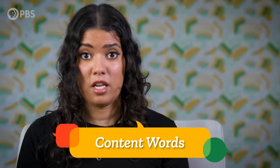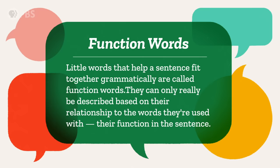Prototype theory works well with content words — words with meanings that we could point to, describe, or draw a picture of. It even works okay with ideas that are abstract, like happiness and democracy. But not every word has a prototype. Take words like 'the,' 'of,' 'is,' 'or,' 'if,' and 'every.' It doesn't make much sense to ask what a 'the' looks like, or try to think of the most prototypical example of an 'of.' These little words that help a sentence fit together grammatically are called function words. They can only really be described based on their relationship to the words they're used with — their function in the sentence. To pin down exactly what these functions are, we can express the relationships between words in mathematical, symbolic terms using predicate calculus.